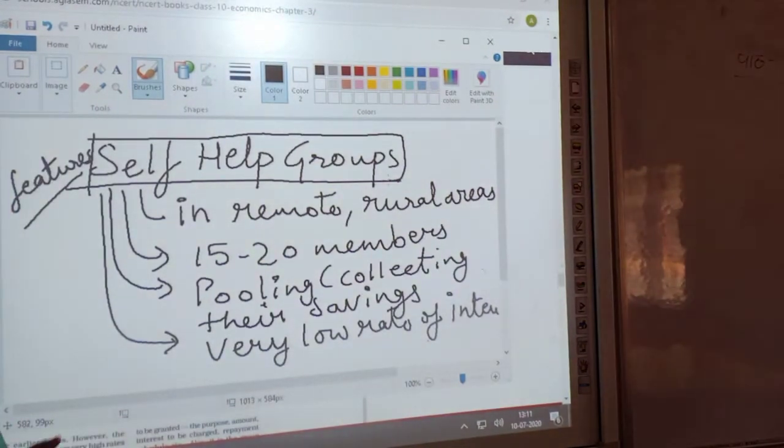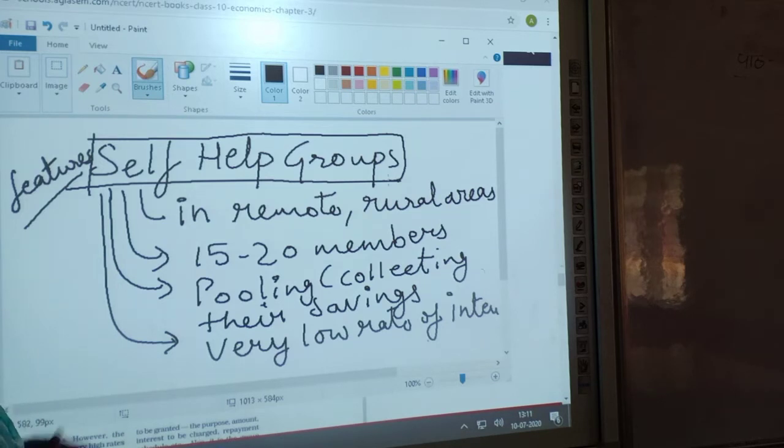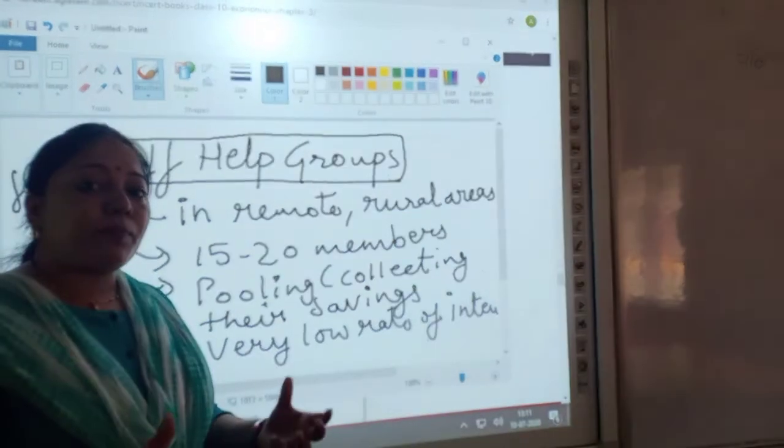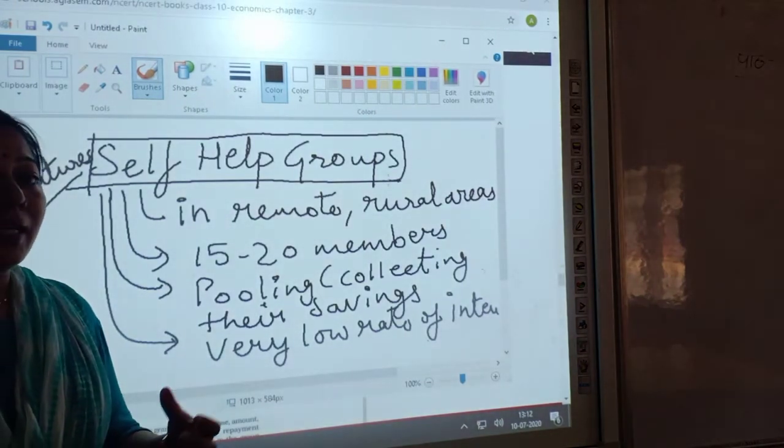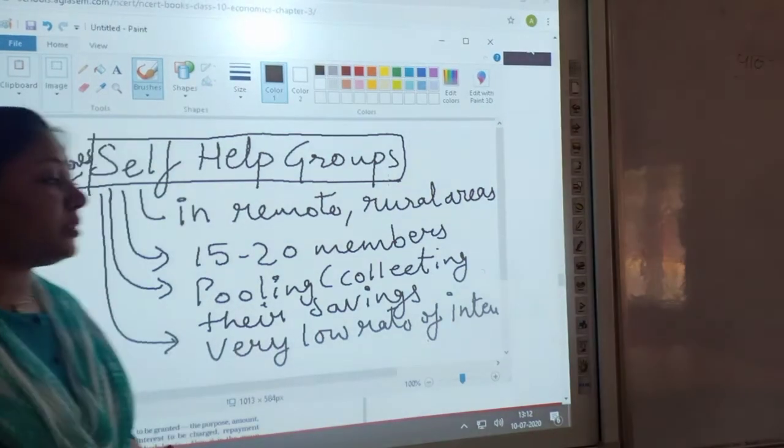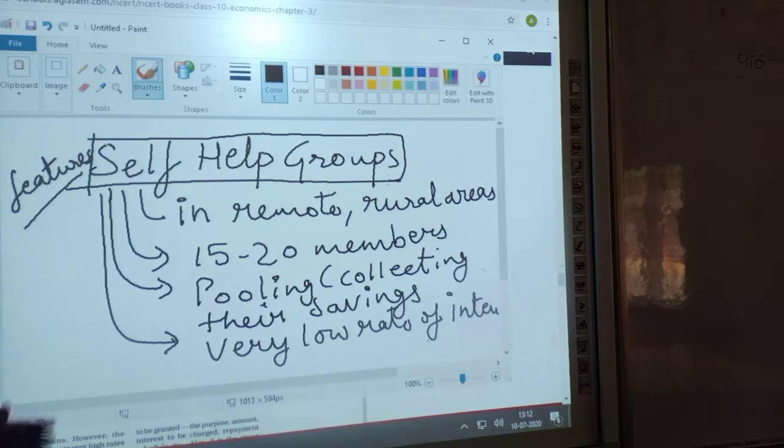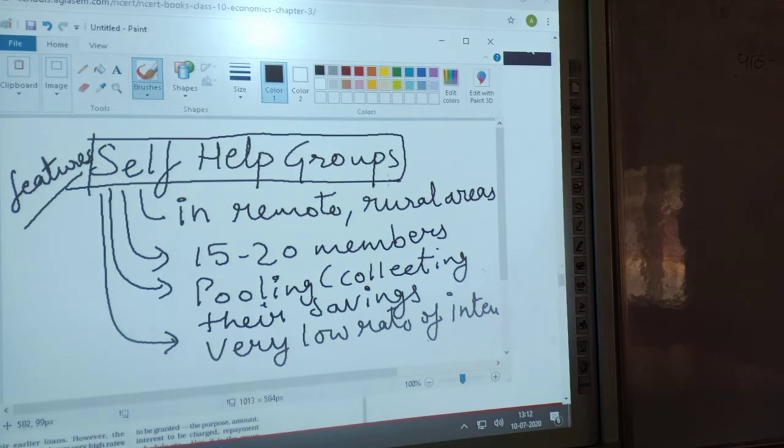So today we have started the last topic of this chapter, that is self-help groups. Here children, we need to understand self-help group means to help yourself. Means the people are sitting together, they are making a union and they are pooling their savings to help each other, to help their members. So in this topic we will be able to understand how the self-help groups function in rural areas at a very grassroots level, why they are starting their self-help groups or unions in their villages.